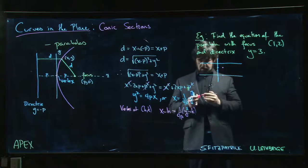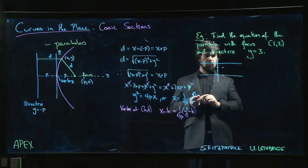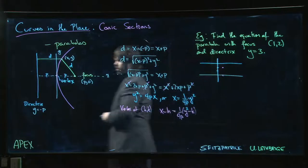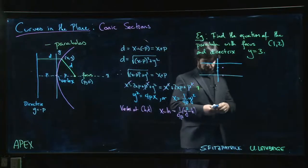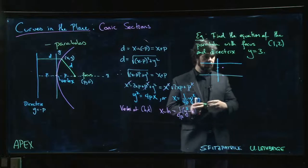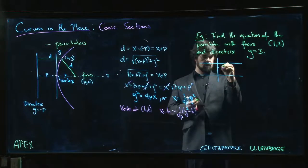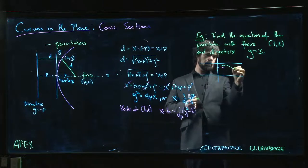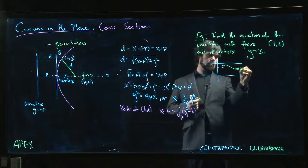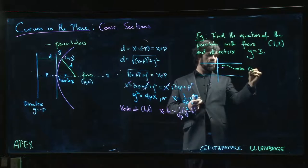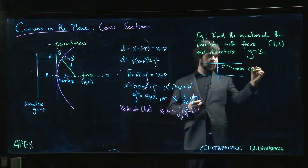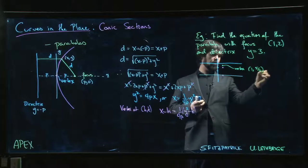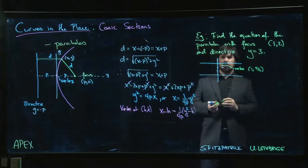So that's the focus. Where's the vertex? Well, the vertex is always halfway between the focus and the directrix. So the vertex is going to be at x equals 1 and y is equal to 5 over 2.